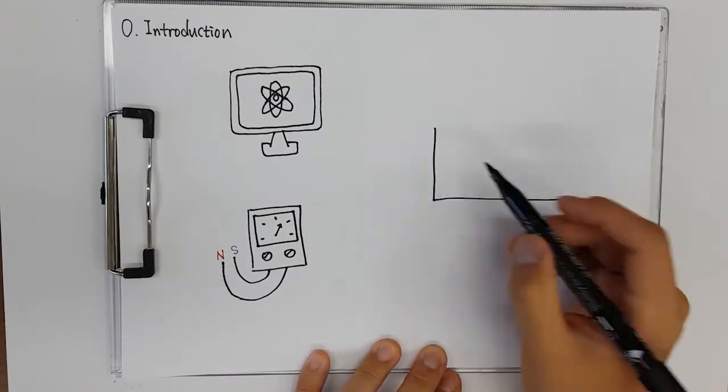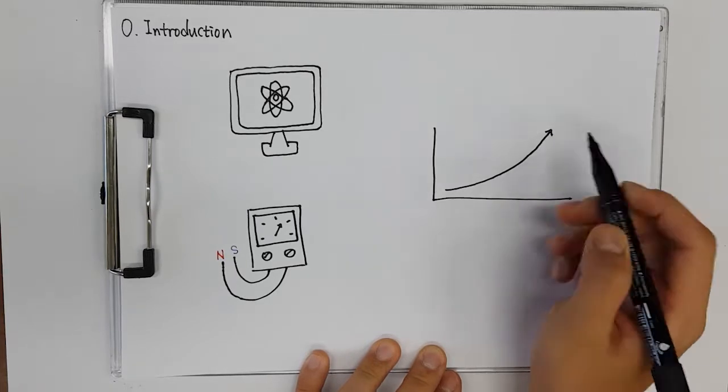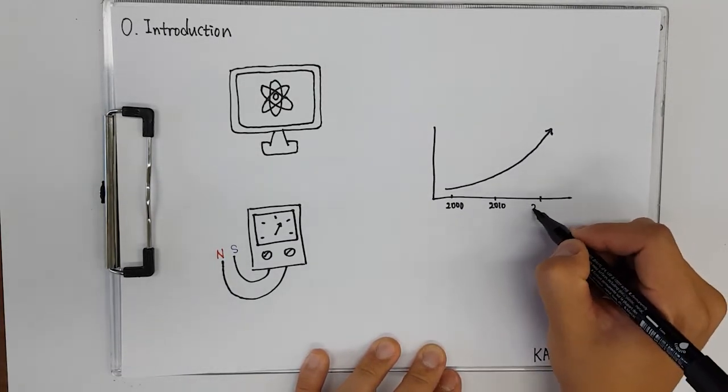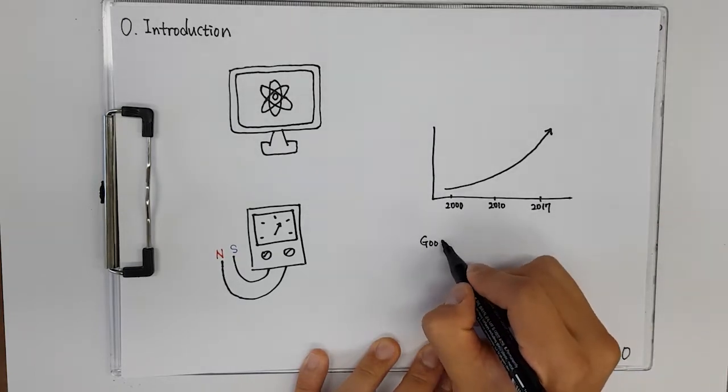Look at this graph. This graph is about total publications mentioning Nitrogen Vacancy and Diamond by year. We can see the rapid rise of this content in recent years.